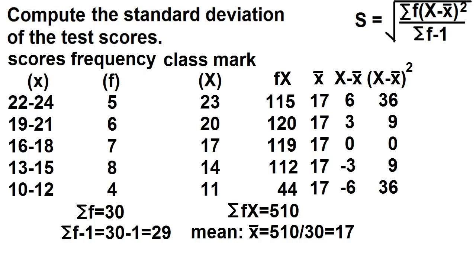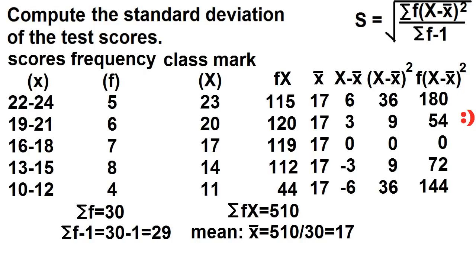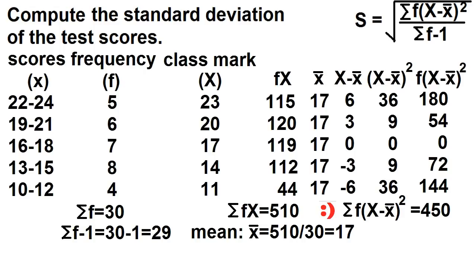The last column is the product of the frequency and the square of the deviation. 5 times 36 is 180. 6 times 9 is 54. 7 times 0 is 0. 8 times 9 is 72. And 4 times 36 is 144. Find the sum: 180 plus 54 plus 0 plus 72 plus 144 is equal to 450.